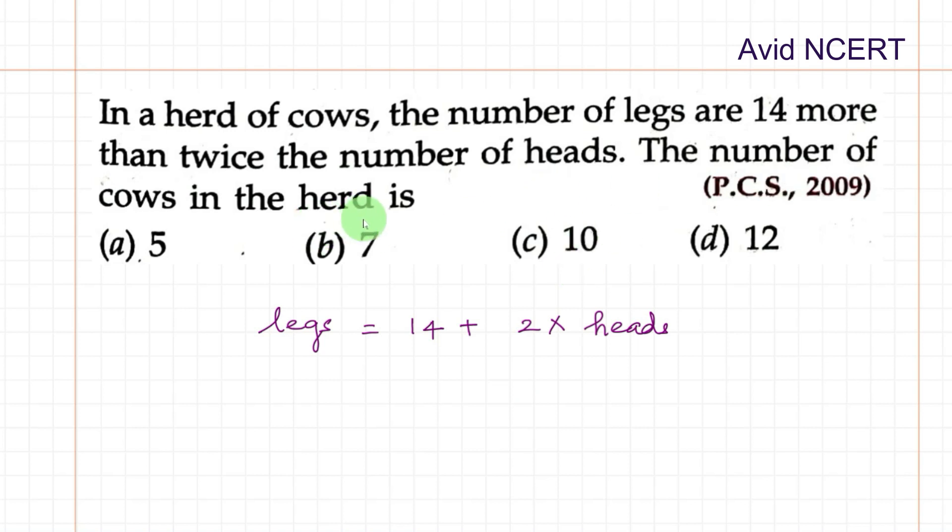So the number of cows in the herd is what we're solving for. Let's take the number of cows as x. Therefore, the number of legs each cow has is 4, right?